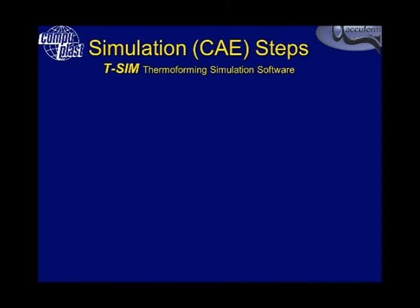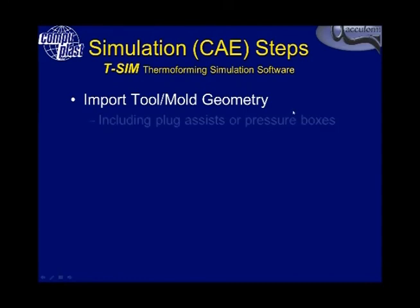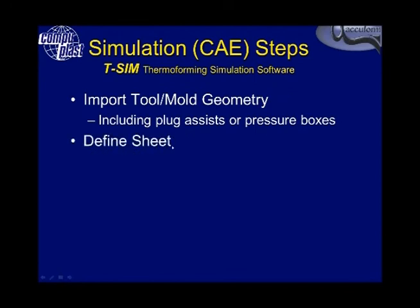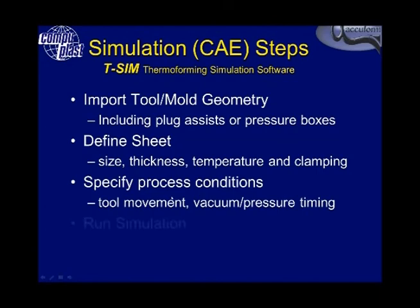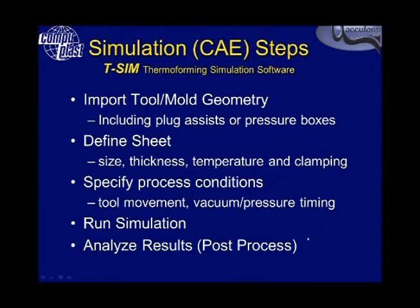The steps required for the simulation specific to T-Sim thermoforming simulation software are as follows. We need to import the tool mold geometry, usually provided as an STL file, since we simply need a surface that the material will form up against — including plug assists or any pressure boxes used to form the material prior to vacuum. Then we define the sheet geometry: the size, thickness, temperature, any temperature profile on the sheet, and the clamping size. Next we specify the process conditions: the timings, the movement of the tools, when the vacuum is applied, how long it's applied for, temperatures, heat, and friction coefficients. Finally, we run the simulation and then analyze or post-process the results.